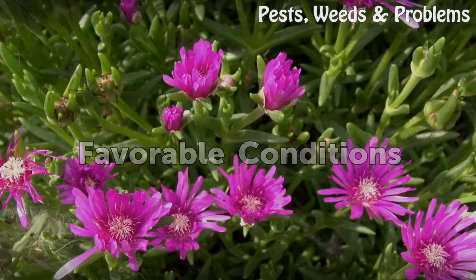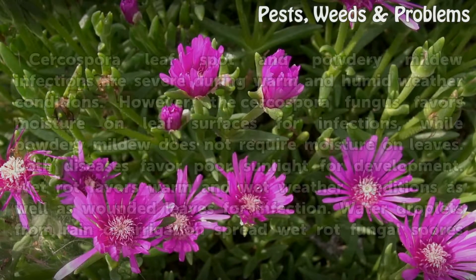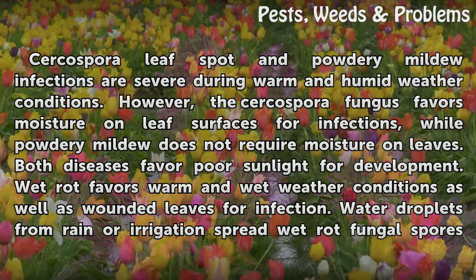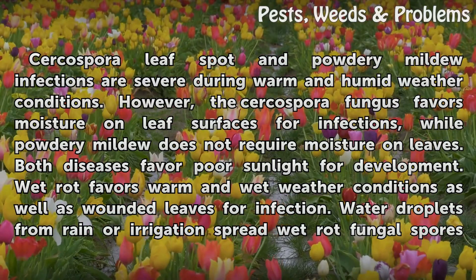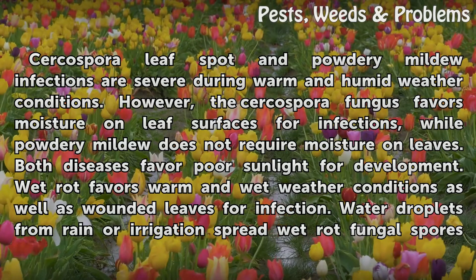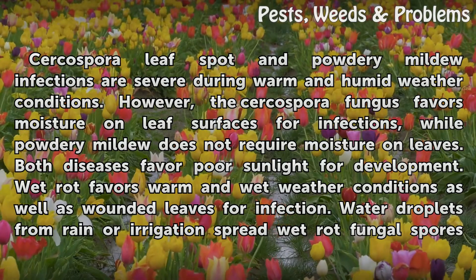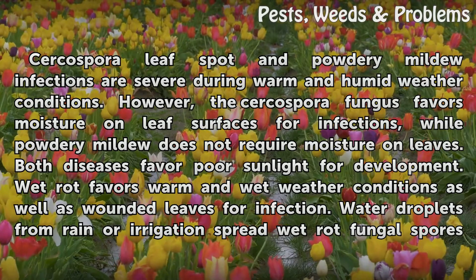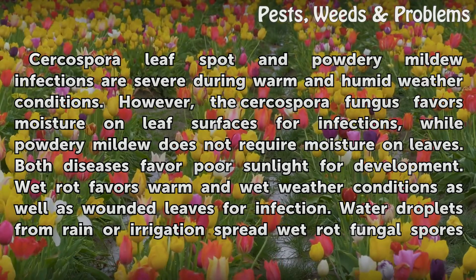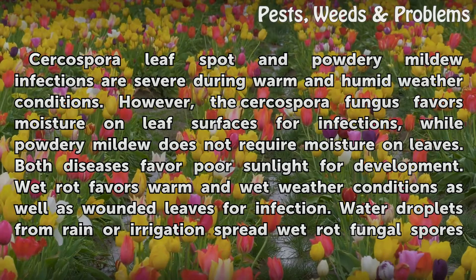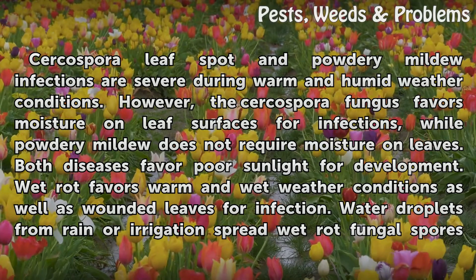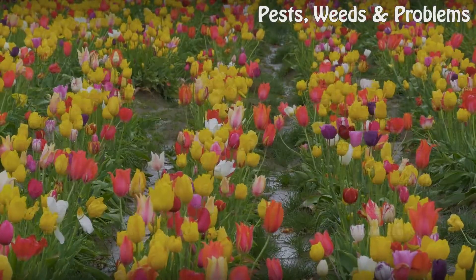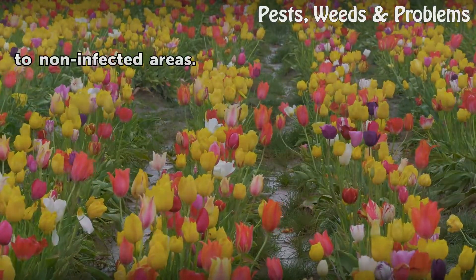Favorable Conditions. Cercospora leaf spot and powdery mildew infections are severe during warm and humid weather conditions. However, the Cercospora fungus favors moisture on leaf surfaces for infections, while powdery mildew does not require moisture on leaves. Both diseases favor poor sunlight for development. Wet rot favors warm and wet weather conditions as well as wounded leaves for infection. Water droplets from rain or irrigation spread wet rot fungal spores to non-infected areas.